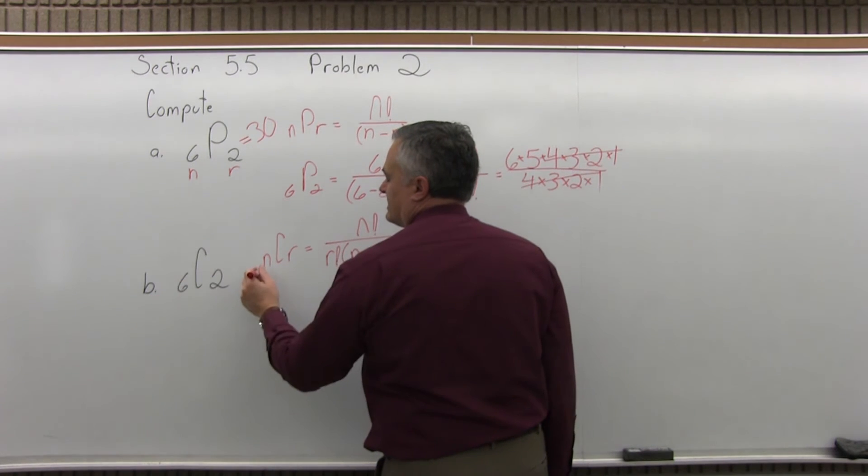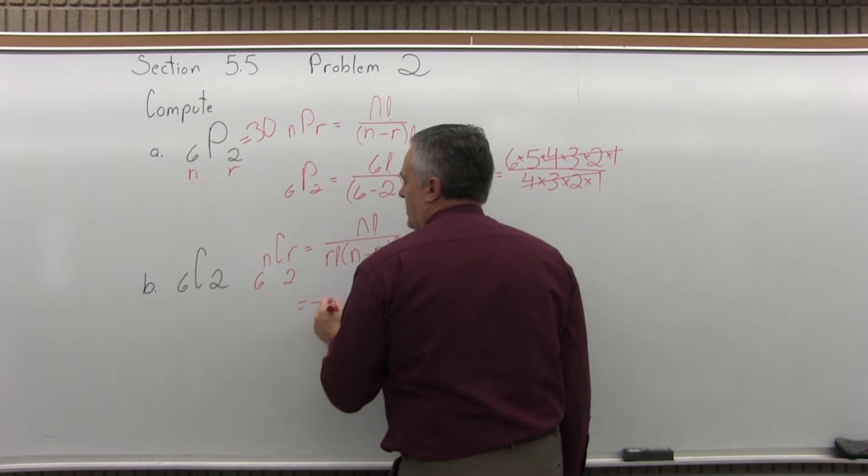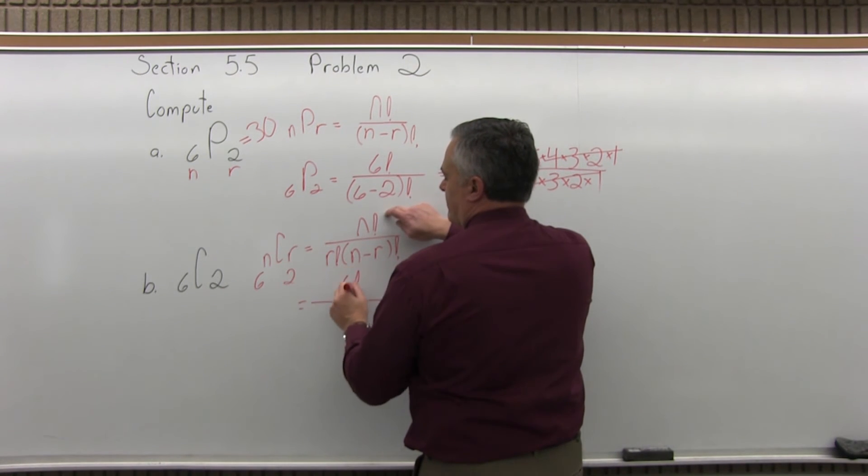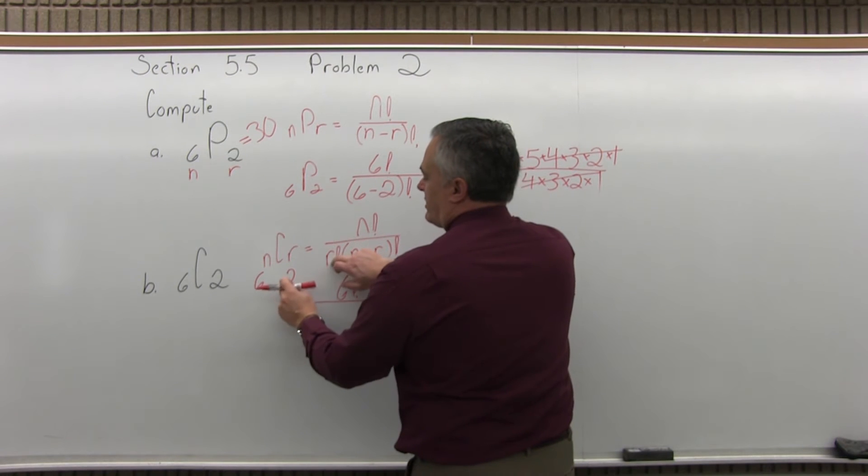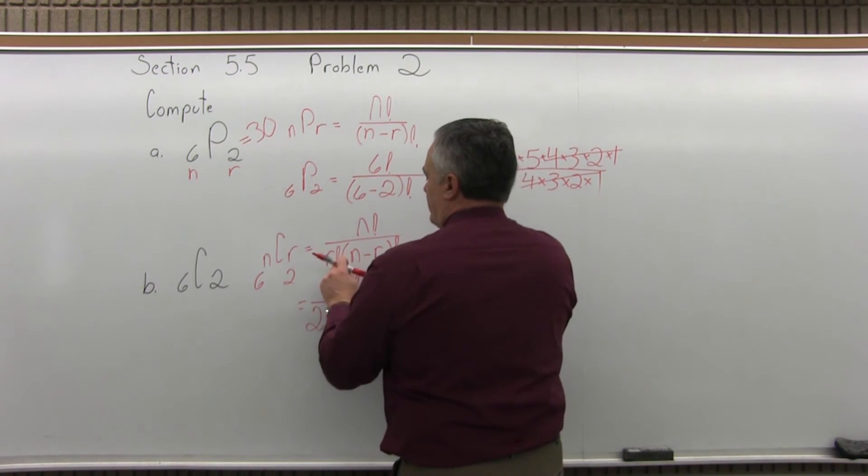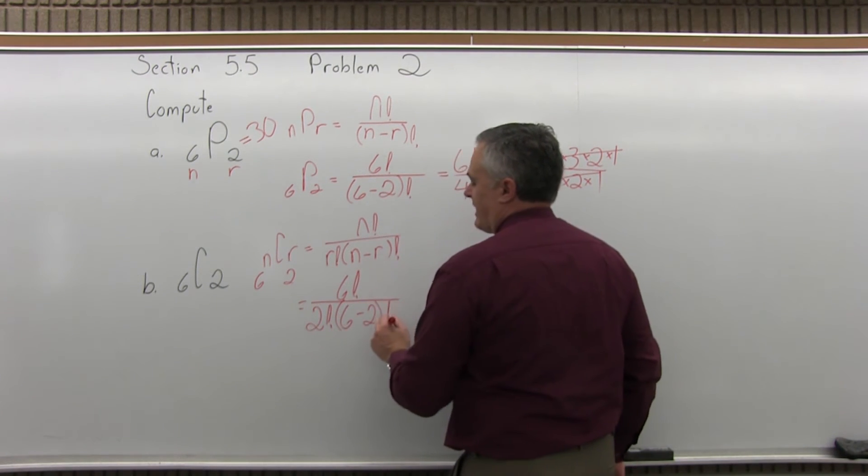Now, in this case, the n is 6, the r is 2. So as I fill in this formula, n factorial will be 6 factorial. The r factorial in front of the parentheses will be 2 factorial. And then the parentheses, n minus r, will be 6 minus 2 factorial.